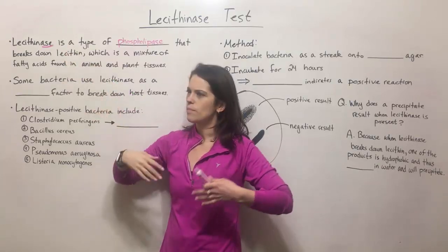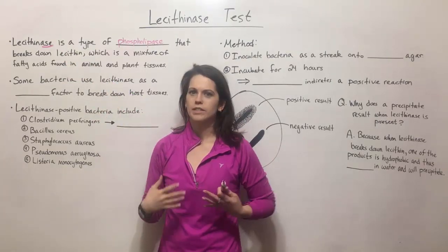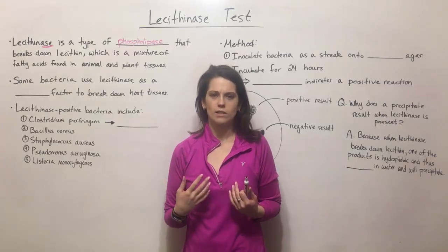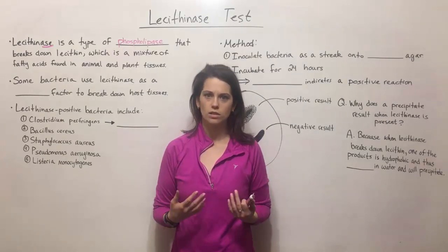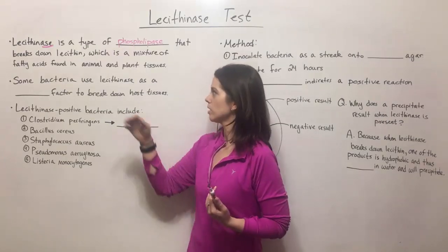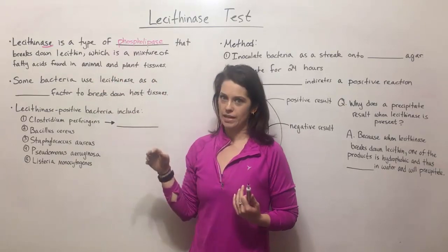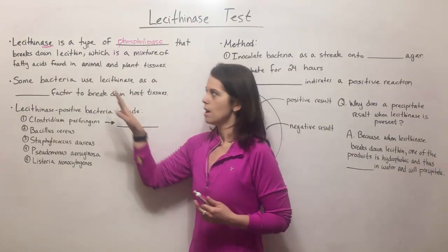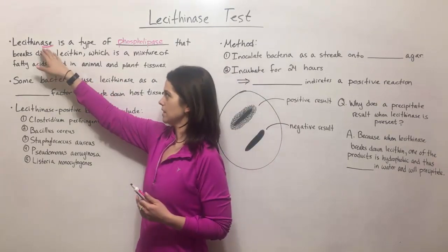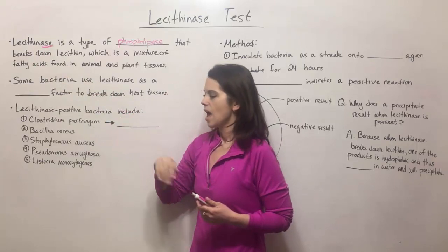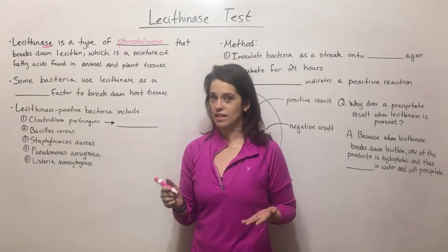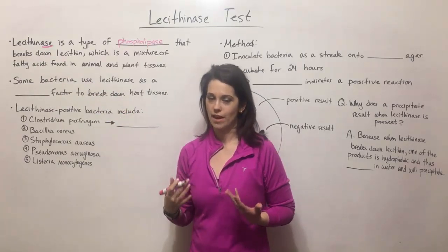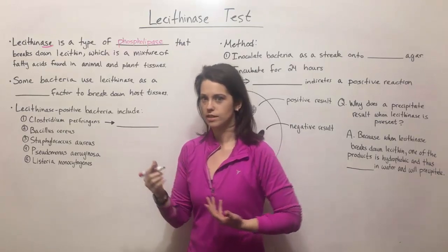Lecithin is a mixture of different kinds of fatty acids — things like phosphatidylcholine and phosphatidyl inositol and more — that are found in animal and plant tissues. Some bacteria make a lecithinase and they actually use it as a virulence factor to help them establish infections and cause disease.